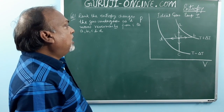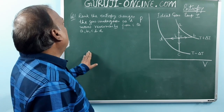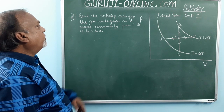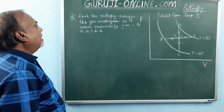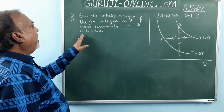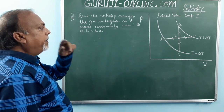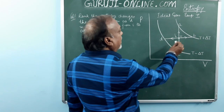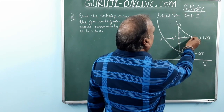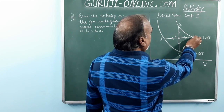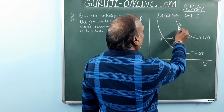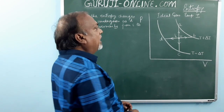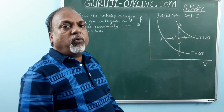The question is: when the entropy changes as the gas undergoes each process reversibly from I to A, B, C, and D — we have to find out in which process the entropy will be the greatest, which will be the least, and grade all four processes.